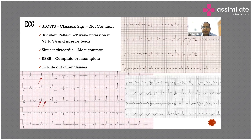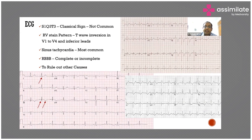Moving to ECG: many people say it will show S1Q3T3. S1Q3T3 is a classical sign but it is not very sensitive and not very specific. If you get S1Q3T3, you can think the patient may have pulmonary embolism, but it is not specific — it has a high positive predictive value but is not specific.